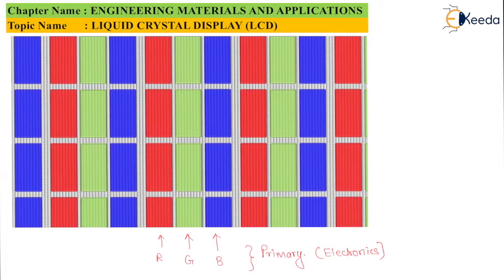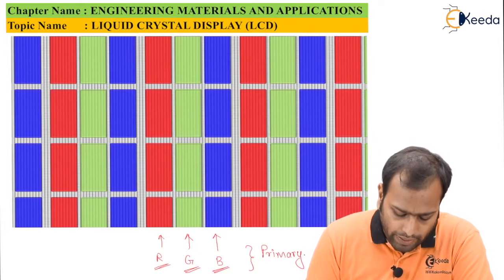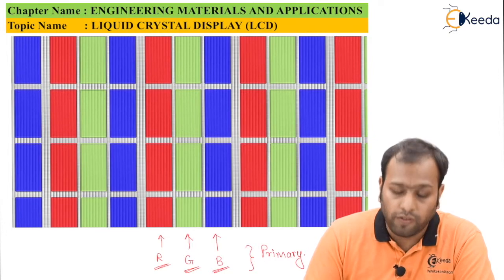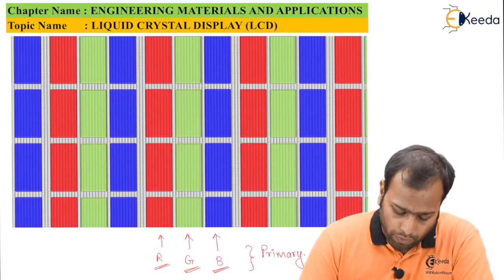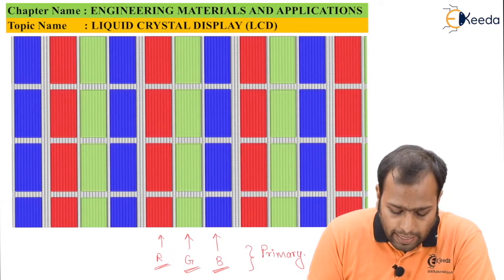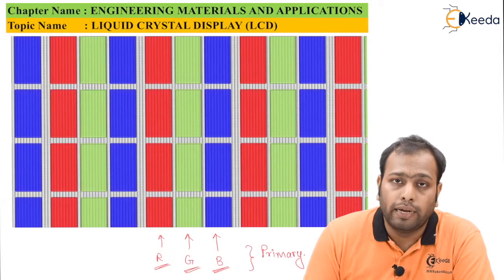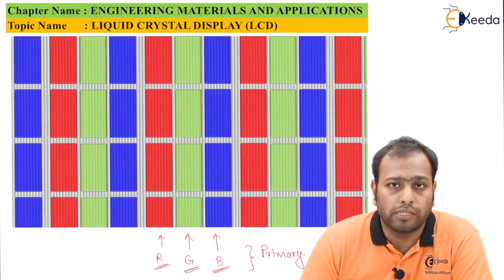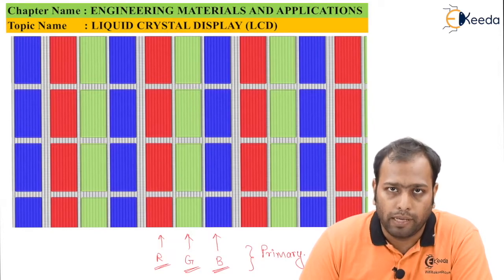These are the primary colors for electronics. Electronics has primary colors as red, green and blue. With red, green and blue you can make all the colors possible — it is nothing but wearing some shades of red, some shades of green and blue. One pixel has no role to play; it is a series of pixels which makes up an image.